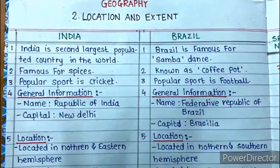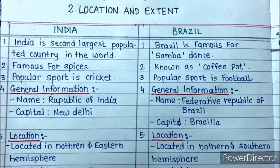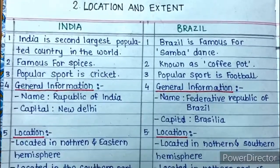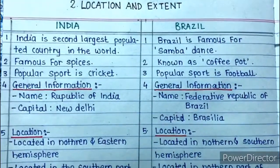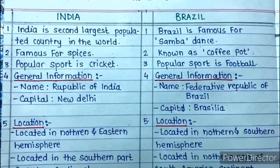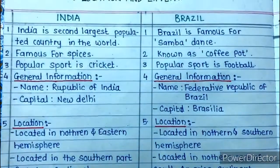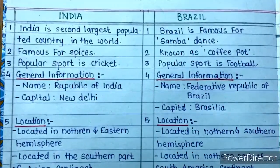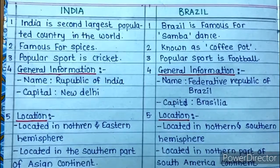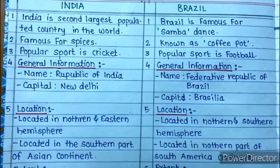Geography chapter number two: Location and Extent. I am going to give you a comparative study. Whatever points are included in the lesson, I have tried to sum them up here. You can see the two columns — India and Brazil. In the India column I have enlisted the details of India, and in the Brazil column the details of Brazil.